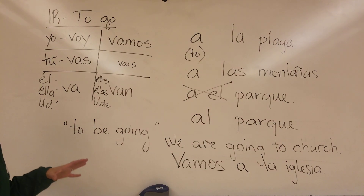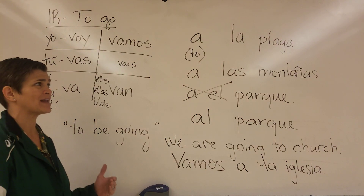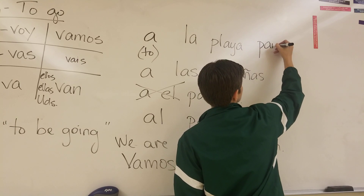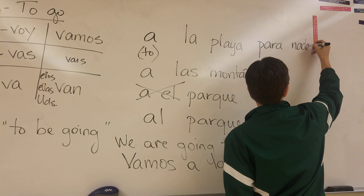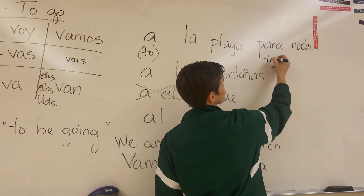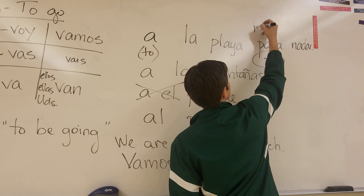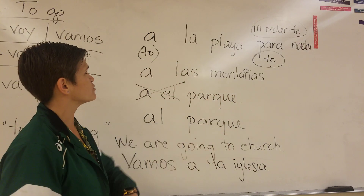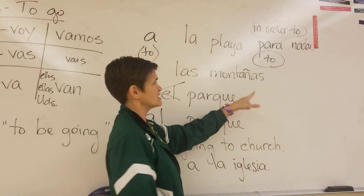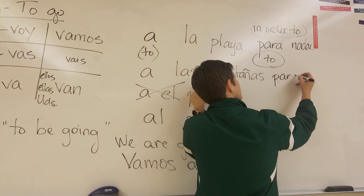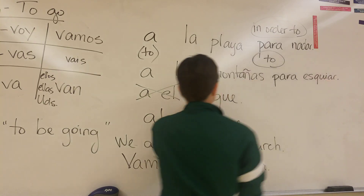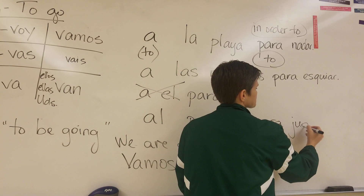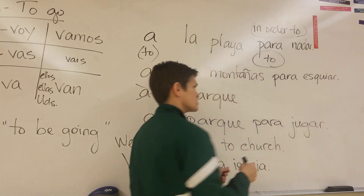The very last thing I'm going to add to the notes is that if you're going to a place in order to do an action, we add the word para, meaning in order to. So: I go to the beach in order to swim — yo voy a la playa para nadar. I go to the mountains to ski — voy a las montañas para esquiar. I go to the park to play — voy al parque para jugar. So I go there in order to do this action: add para and then the infinitive.